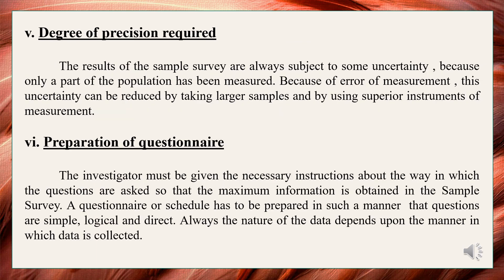Degree of precision required: The results of the sample survey are always subject to some uncertainty because only a part of the population has been measured. This uncertainty can be reduced by taking larger samples and by using superior instruments of measurement, but this usually costs time and money. Consequently, the specification of the degree of precision wanted in the results is an important step.